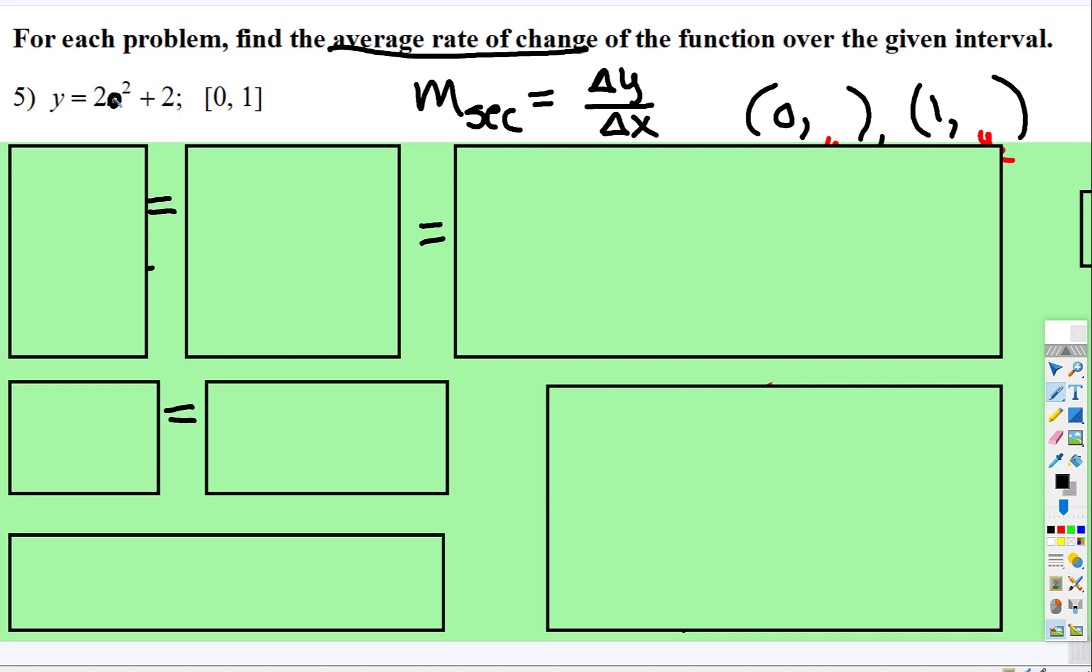So we plug 0 into this, 0 squared is 0, 2 times 0 is 0, 0 plus 2 is 2. And then we plug 1 into that x, 1 squared is 1, 2 times 1 is 2, 2 plus 2 is 4. So now we have our x1, y1, x2, y2.